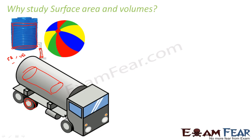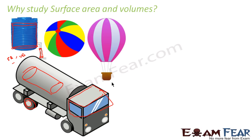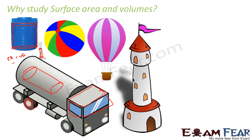Surface area and volume apply in many places. For example, a cuboid-shaped driver's pit — you can find the volume of space inside. For a parachute, you can find its surface area or volume. For a tower shaped like a cone, if you want to paint it red and need to know how many liters of paint are required, you find the surface area of the cone.